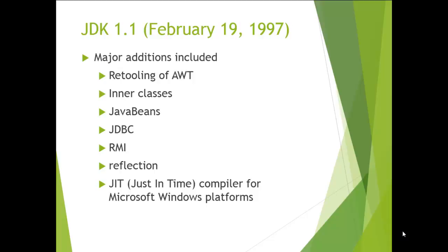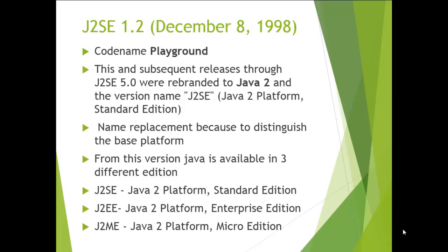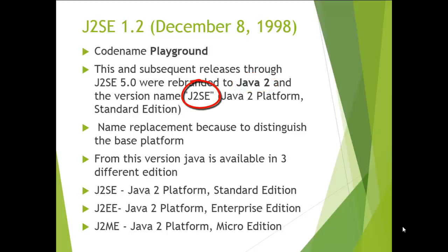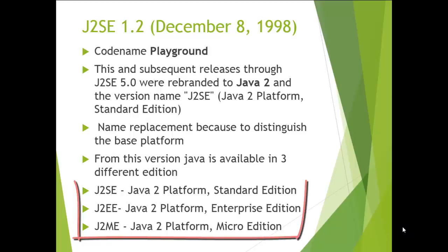These three versions are the base versions of Java. Next comes J2SE 1.2, released on 8th December 1998, with the code name 'Playground'. This and subsequent releases through J2SE 5.0 were rebranded to Java 2, with the version name J2SE — Java 2 Platform Standard Edition. The Java team changed the name to distinguish the base platform from this new version.